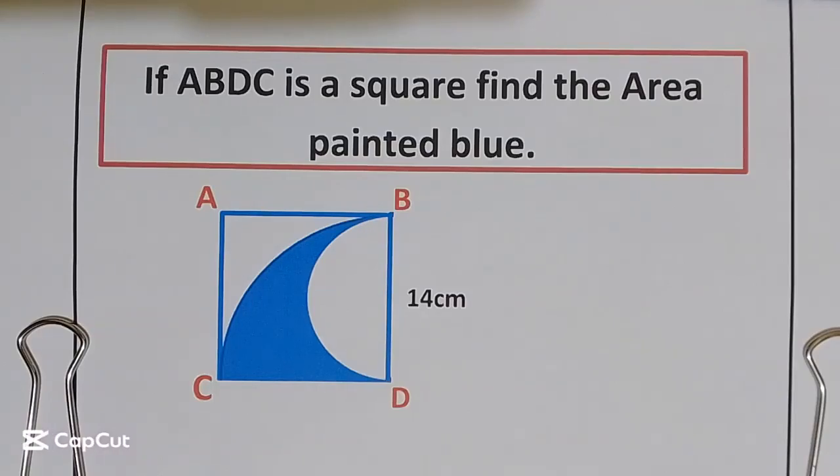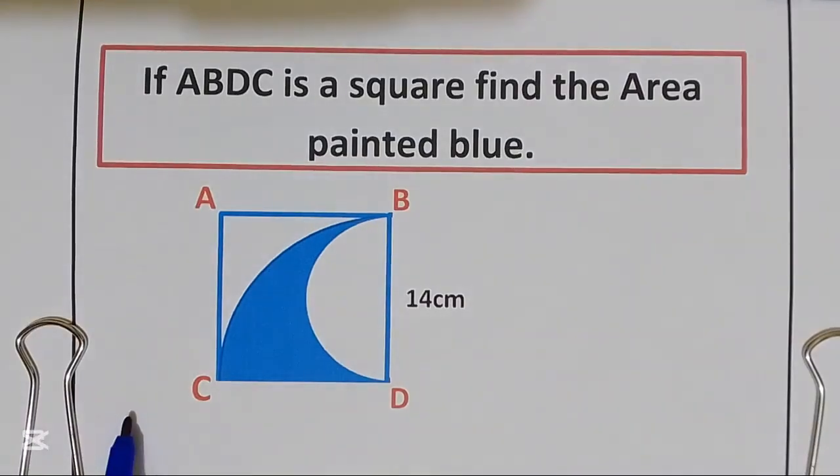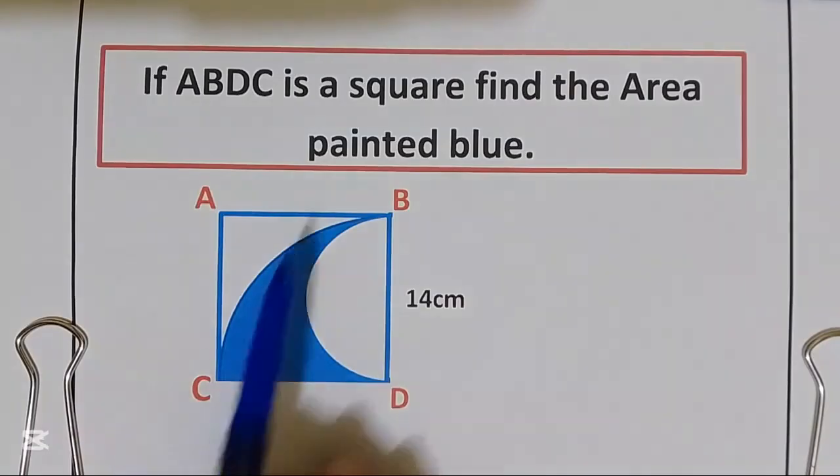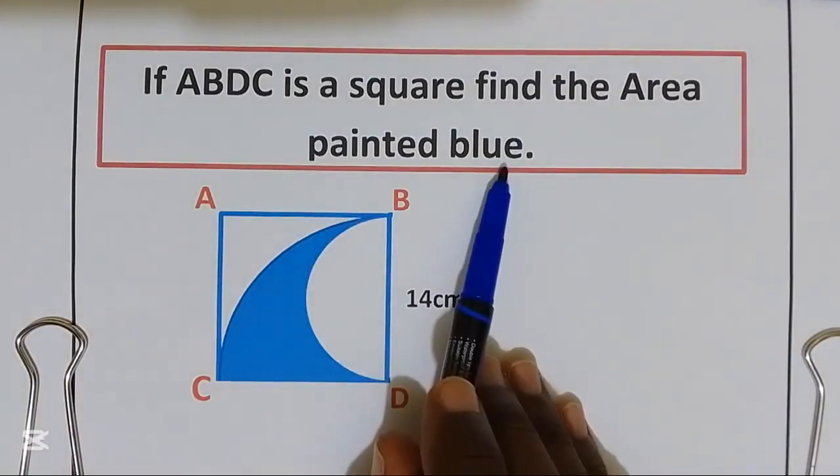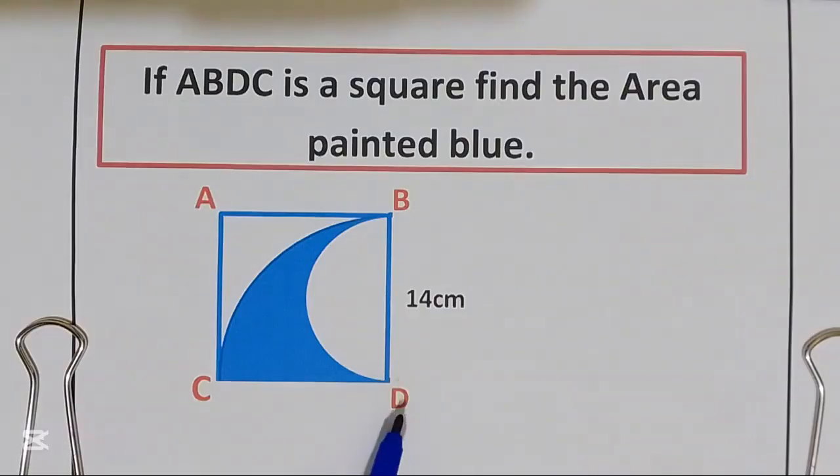Hello, welcome back to the channel. We have the question. We are supposed to find the area painted blue given that A, B, D, C is a square.